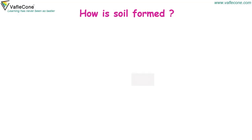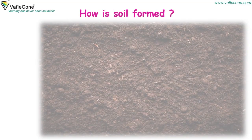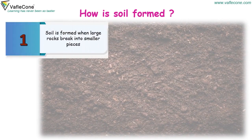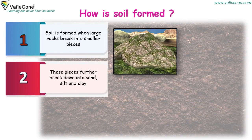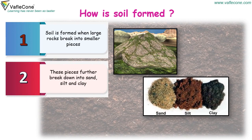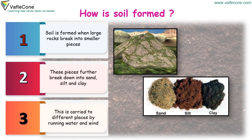How is soil formed? Soil is formed when large rocks break into smaller pieces. These pieces further break down into sand, silt and clay. This is carried to different places by running water and wind.